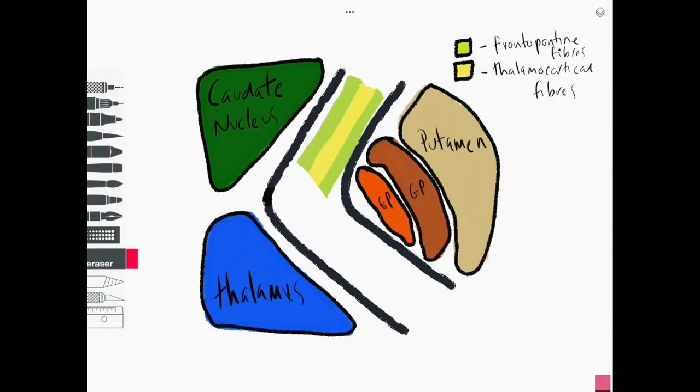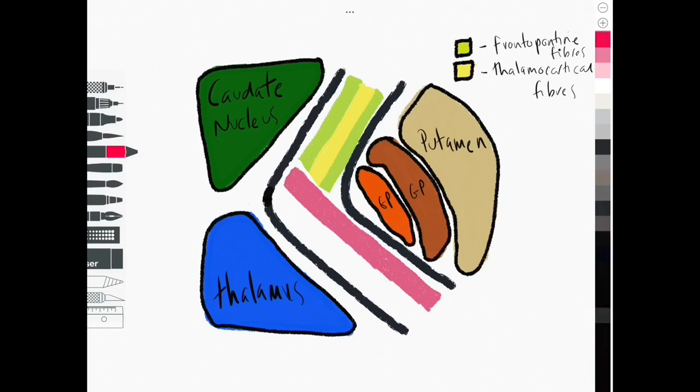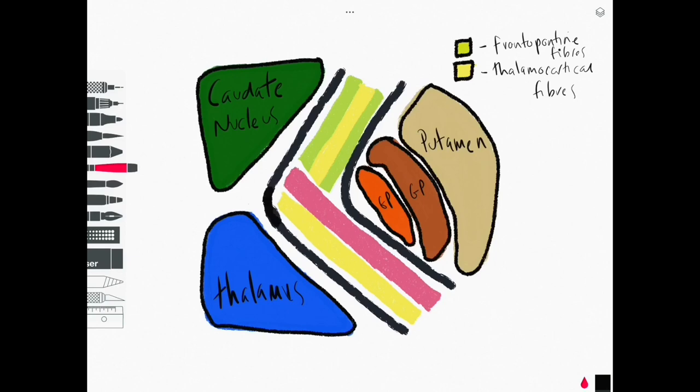The thalamocortical fibres are somatosensory in function coming from the body and trunk relaying to the thalamus before going on to the cortex. In the posterior limb and genu we have some motor fibres here in pink and we have more of those thalamocortical fibres.